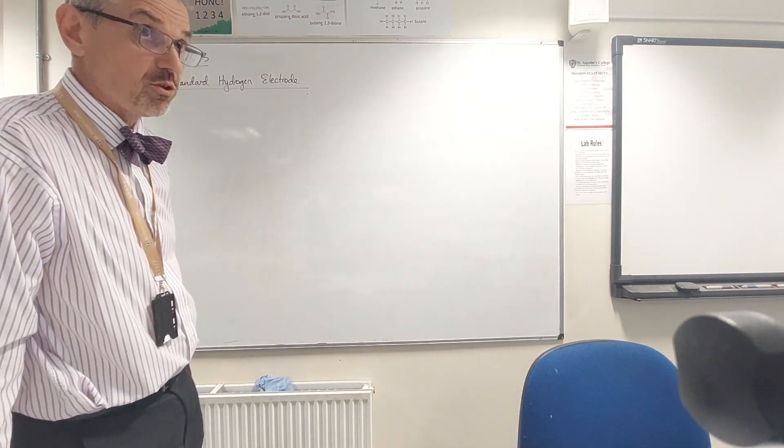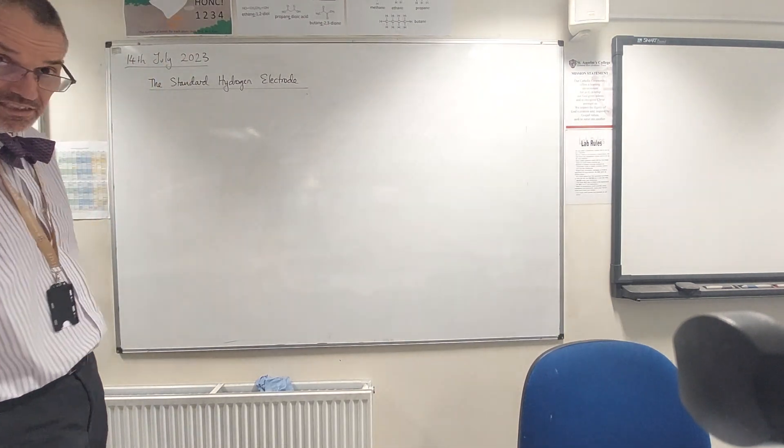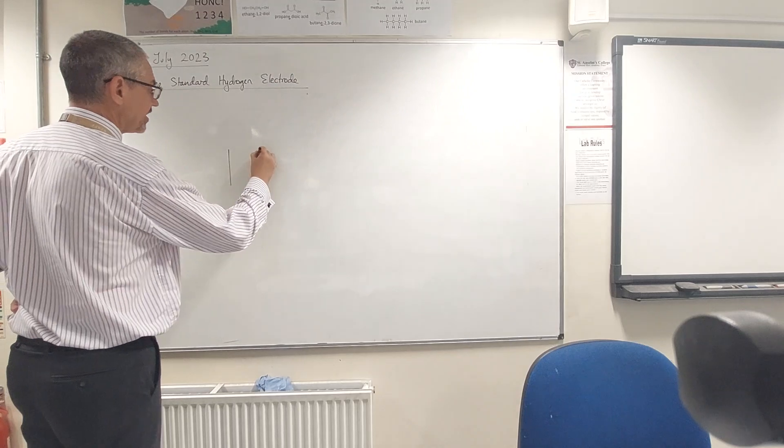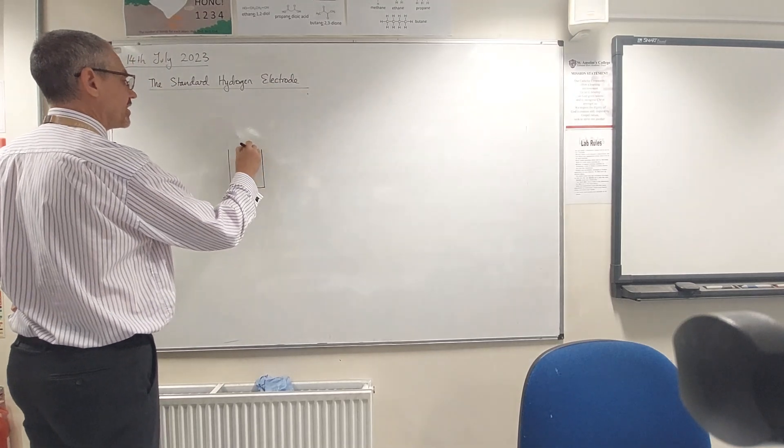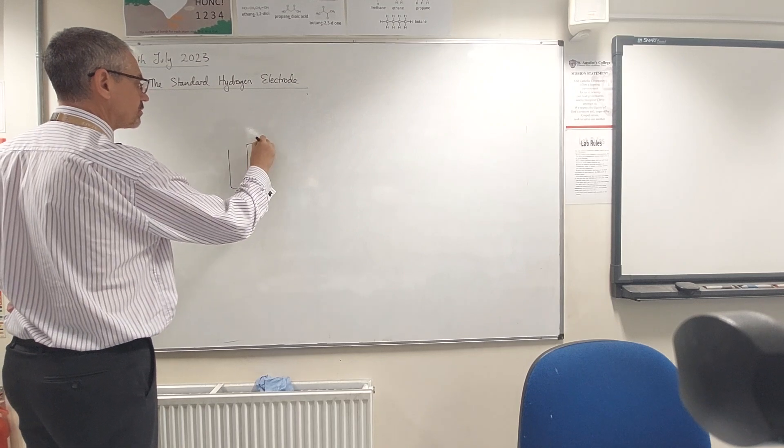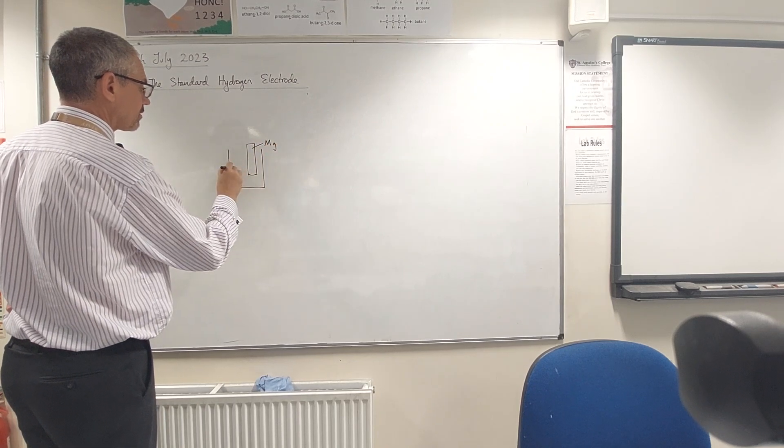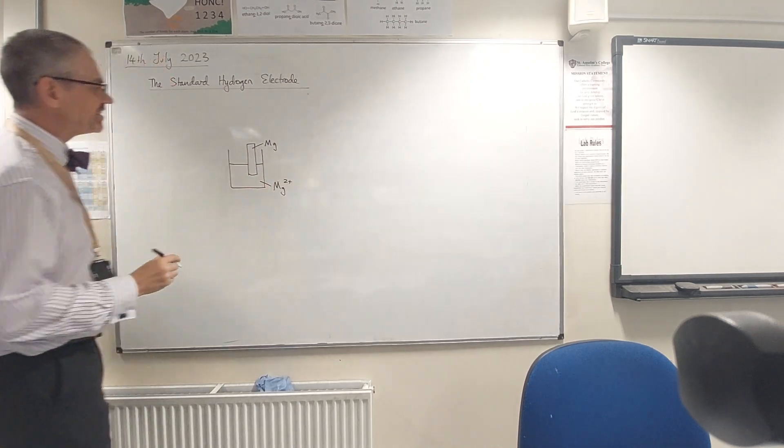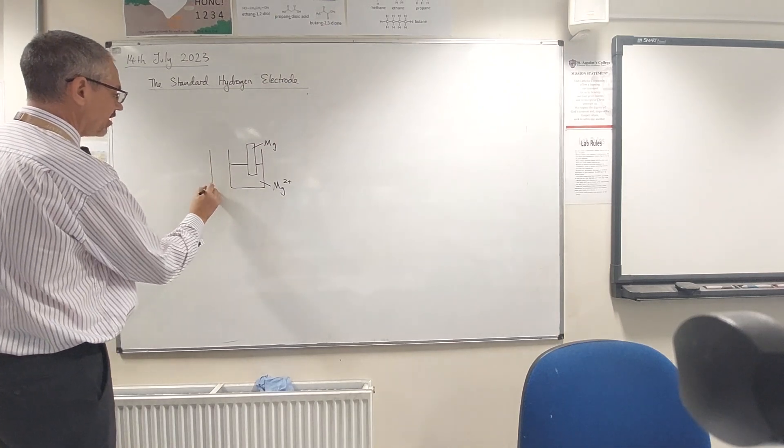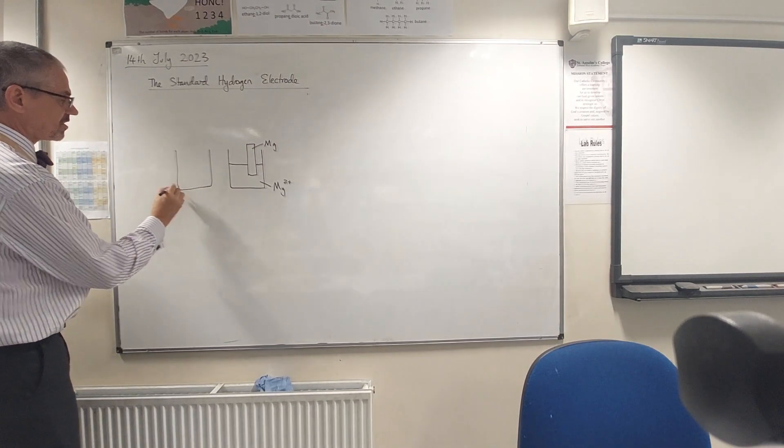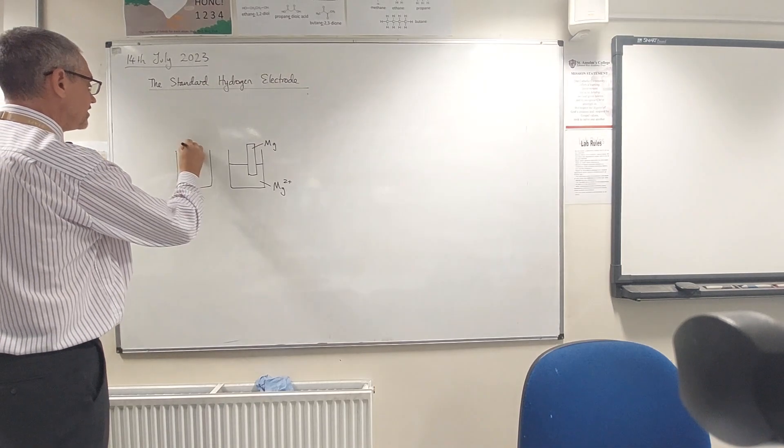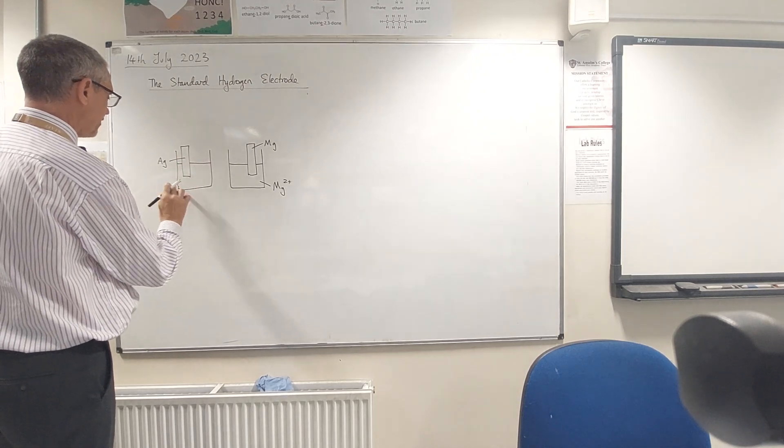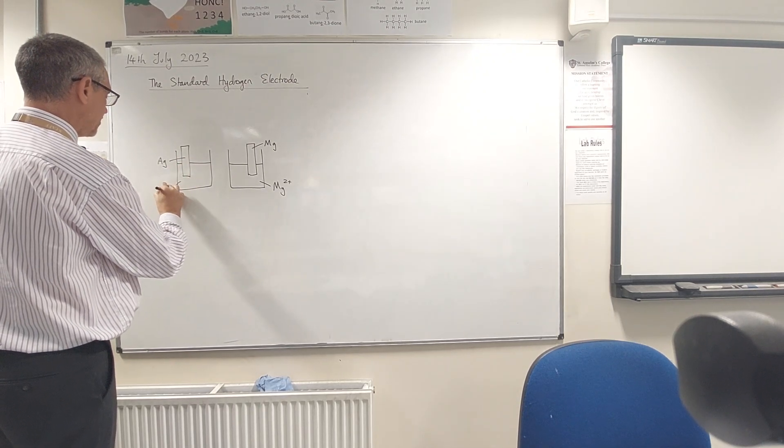Okay, in our last lesson we talked about making cells. I had the zinc copper cell, didn't I? I'm gonna have a magnesium cell this time. If I put some magnesium into magnesium sulfate, I'll have a solution of magnesium ions, and over here some other metal, some silver.